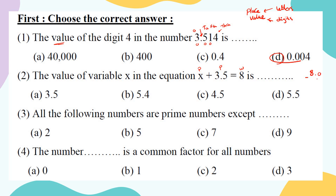Line up the numbers from the decimal point: put 8 above with a zero as the decimal part, and place the decimal under decimal. Zero minus 5 can't be done, so borrow from 8 — it becomes 7, and we get 10. Ten minus 5 equals 5, drop the decimal, 7 minus 3 equals 4. The right answer is C.